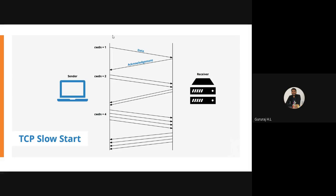For each data sent, you should get an acknowledgement. Hence TCP is also called a guaranteed service protocol — we are very sure that all the data being delivered will be received by the receiver. This is assured through acknowledgements. If you are not going to receive any acknowledgement, that indicates the data has been lost in the network.